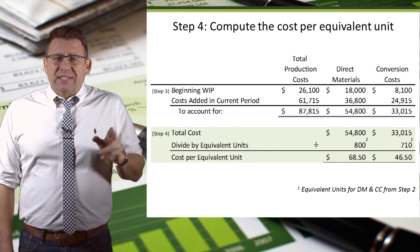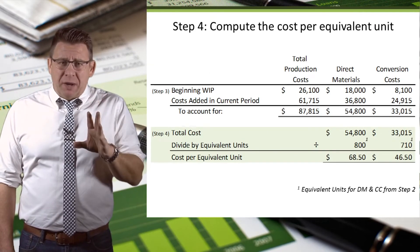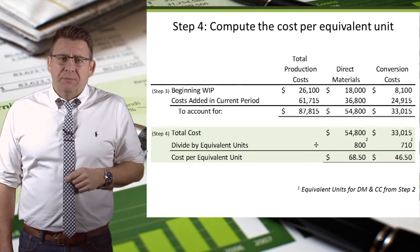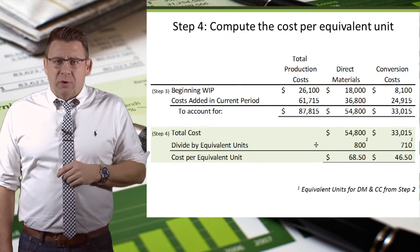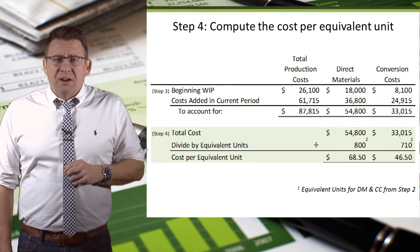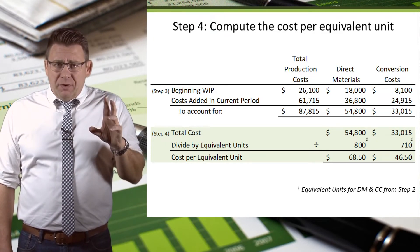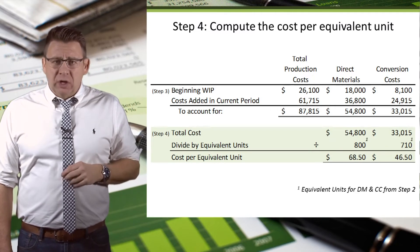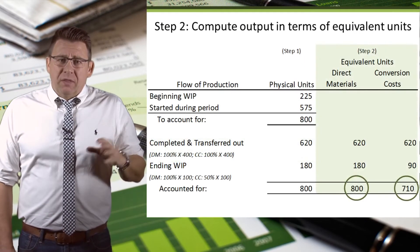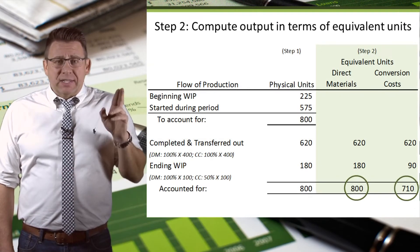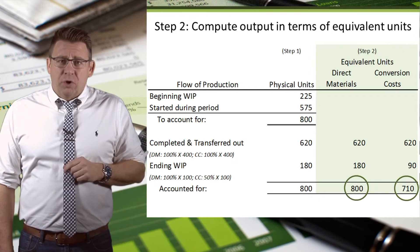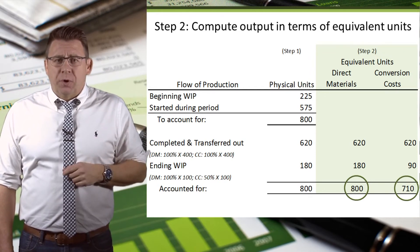Step 4 is calculating the cost of direct materials and conversion costs per equivalent unit. This step is pretty straightforward. We take the direct material and conversion costs from the prior step and divide them by the total equivalent units calculated in step 2. The total equivalent units is 800 for direct materials and 710 for conversion costs — that's what we're going to use in step 4.